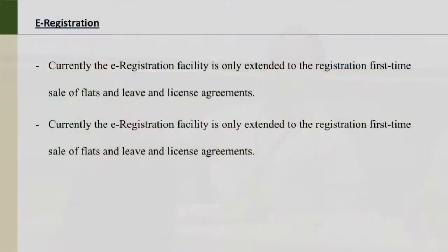E-registration is the next generation of the iSarita software. It proposes that you don't have to come to the registrar's office at all — you can do your registration from wherever you are, using your Aadhar card as ID. Right now it is being used only for first-time sale of flats and leave-and-license agreements, chosen because they are low-risk, high-volume transactions. For a first-time sale of flat, you don't have to verify title because it is presumed to be a clean title.